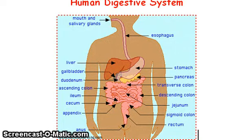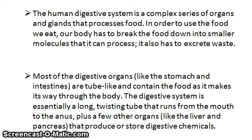Human Digestive System. The human digestive system is a complex series of organs and glands that processes food. In order to use the food we eat, our body has to break the food down into smaller molecules that it can process.